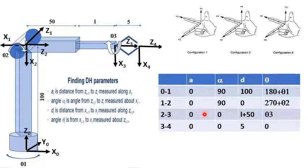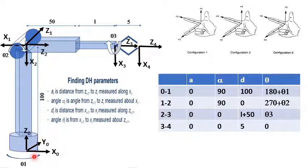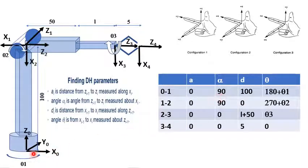For alpha: alpha one is 90 degrees because Z0 to Z1 along X1 requires a 90-degree rotation to become parallel, and the rotation is in the same direction as X1, so it is positive 90 degrees. Similarly, Z1 to Z2 is also positive 90 degrees because it rotates in the same direction as X2.